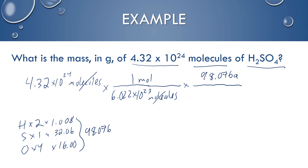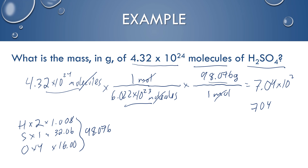That's how many grams are in one mole. When you multiply and divide — molecules divided by Avogadro's number times the molar mass — you get 7.04 times 10 to the 2nd power, or 704 grams. Either way, you're using three sig figs.